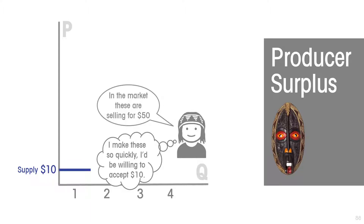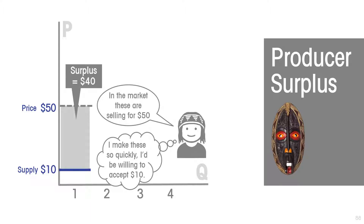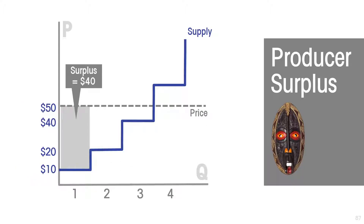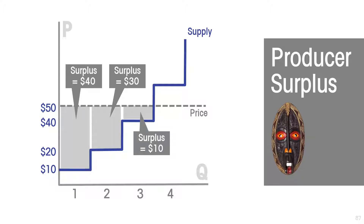When he gets to the market, he discovers that the masks are selling for fifty dollars. The difference between that fifty dollars and the ten dollars he would have accepted is that seller's producer surplus — forty dollars. Another craftsperson, not quite as skilled, is not willing to accept less than twenty dollars. If the going price is fifty, that seller's producer surplus is thirty dollars.